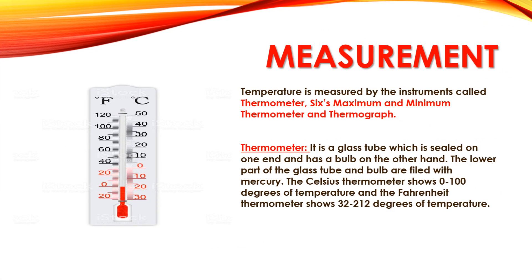Now we will talk about the instruments used for measuring temperature, such as thermometer, Six's maximum and minimum thermometer, and thermograph. We will start with the familiar instrument first — the thermometer. As you can see the figure on the screen, there is a glass tube which is sealed on the lower end and has a bulb. It is filled with mercury. The Celsius scale shows 0 to 100 degrees and the Fahrenheit scale shows 32 to 212 degrees Fahrenheit, and the same applies here in context of the thermometer.